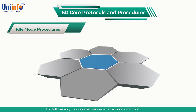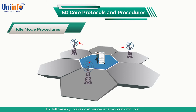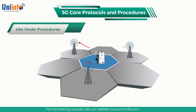A UE attempts to camp on a suitable cell during the cell selection procedure. If the UE fails to camp on a suitable cell, then it will attempt to camp on an acceptable cell. When camped on a suitable cell, the UE can register with the network and access its normal set of services.